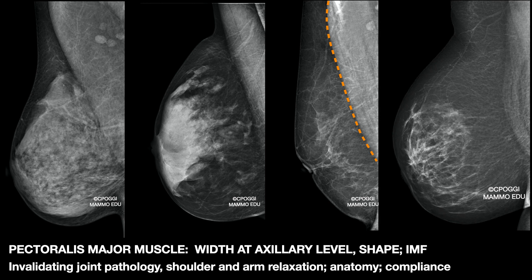Shape, length, and width of the pectoralis major depend on absent joint pathologies, the patient's anatomy, and compliance. If the patient tenses up and stiffens, the result on the image is a rectilinear, concave shape and sometimes big deep folds, or a crinkle-like artefact. I had already talked about that in a previous lesson. In the last image, the patient had a humeral fracture not well healed.